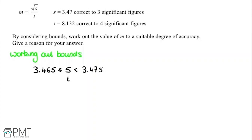Now we do the same with t — the exact same process, but this time for four significant figures. We have 8.132. The lower bound for that would be 8.1315; going any lower and rounding to four significant figures gives 8.131. For the upper value, that would be 8.1325, and we keep the sign as strictly less than, because if we actually had 8.1325 it would round to 8.133, which is not what we want.